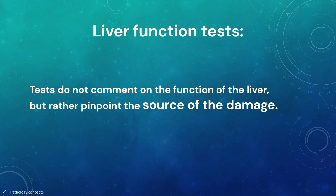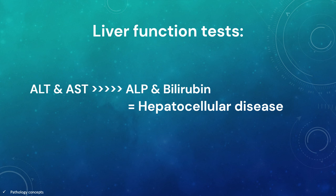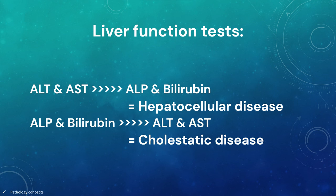The elevations in ALT and AST out of proportion to ALP and bilirubin denotes a hepatocellular disease. The elevation of ALP and bilirubin disproportionate to ALT and AST would characterize a cholestatic pattern.